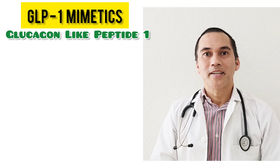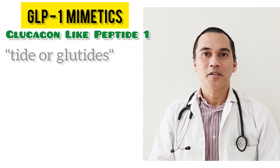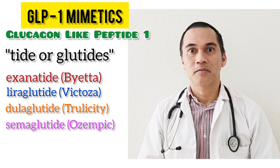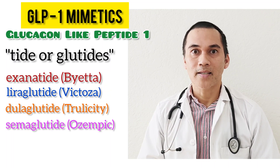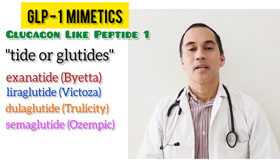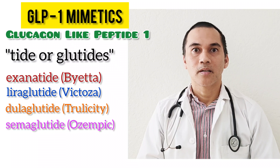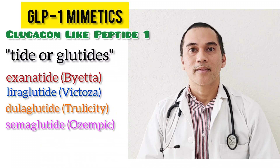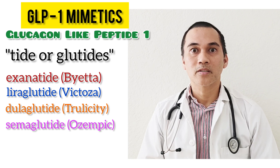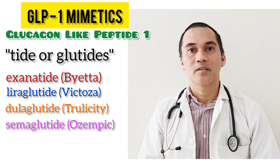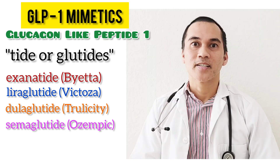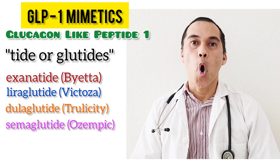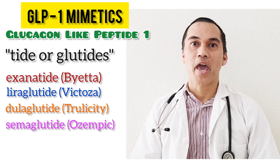So what are these medications? These are the -tide or -glutide class: exenatide, which is Byetta and was the first drug of this class on the market; liraglutide, which is Victoza; dulaglutide, which is Trulicity; and semaglutide, which is Ozempic.